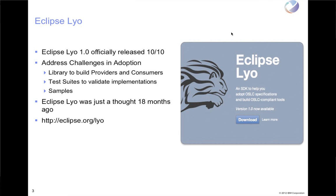Folks that follow the Leo dev mailing list are probably aware that we did have an official 1.0 release from Eclipse and the project has graduated from incubator status to a full-fledged Eclipse project. The content of 1.0 is basically OSLC4J and also the test suites, although the test suites are not necessarily packaged up and consumable like an SDK the way OSLC4J is.